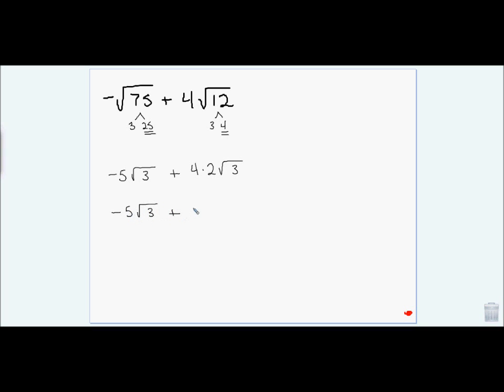So I have negative 5 root 3 plus 8 root 3. Negative 5 plus 8 is 3. So I have 3 times the square root of 3.